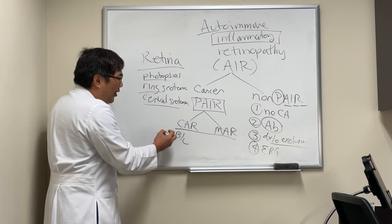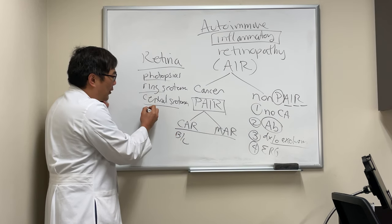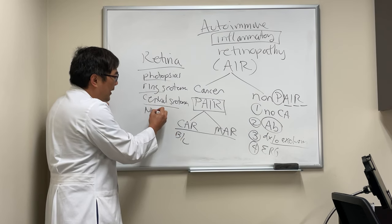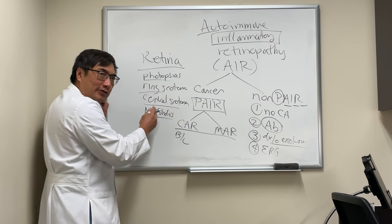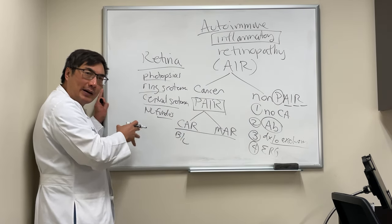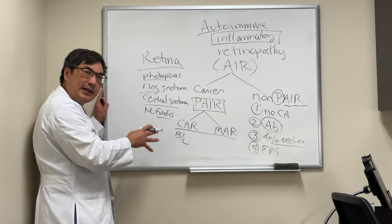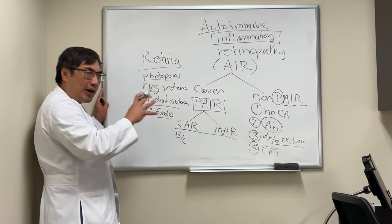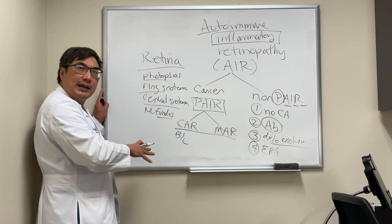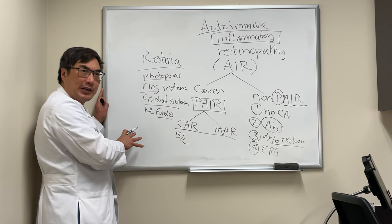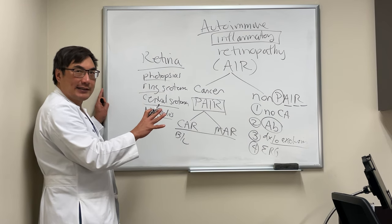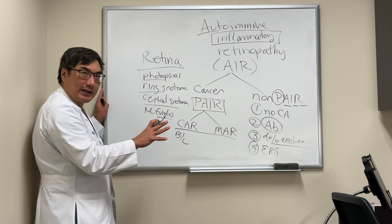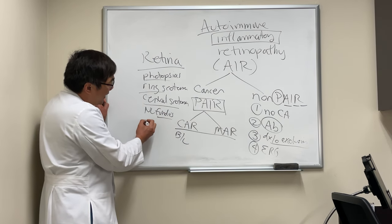The photopsia is often described as swirling lights. In both CAR and MAR, the fundus is normal initially. However, over time there will be arterial narrowing, optic atrophy, and RPE change, which can be visible on OCT. But in the beginning it looks like a normal fundus.